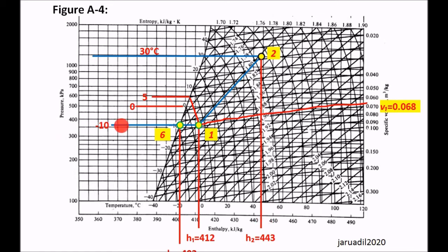Looking at the blue line — that is the cycle. This is your 1 to 2 compression, then 2 to 3. Let us focus on points 6, 1, and 2, since we need to find the enthalpies there. Starting from negative 10 degrees Celsius — you can see the negative 10 degrees Celsius here. It is slightly covered but it is there.